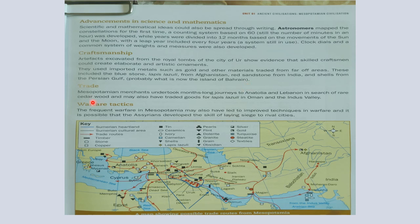Mesopotamian merchants undertook months-long journeys to Anatolia and Lebanon in search of rare cedar wood, and may also have traded goods for lapis lazuli in Oman and the Indus Valley. The frequent warfare in Mesopotamia may also have led to improved techniques in warfare, and it is possible that the Assyrians developed the skill of laying siege to rival cities. A map of this period depicts the trade routes — red lines showing trade routes, Sumerian heartlands in blue, and Sumerian cultural areas marked separately.